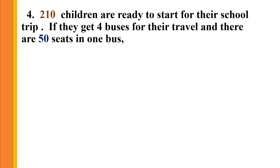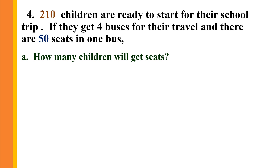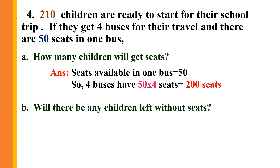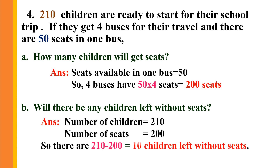Fourth question: 210 children are ready to start for their school trip. They get 4 buses for travel and there are 50 seats in 1 bus. How many children will get seats? Seats in 1 bus = 50, so 4 buses have 50 into 4 = 200 seats. Will there be children left without seats? There are 210 children but only 200 seats, so 210 minus 200 = 10 children are left without seats.